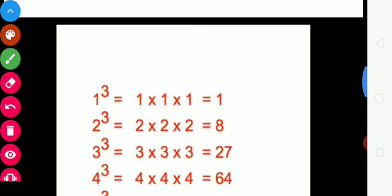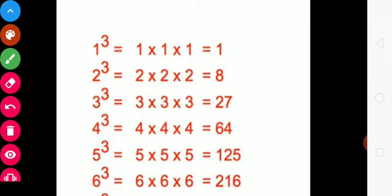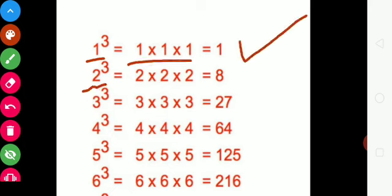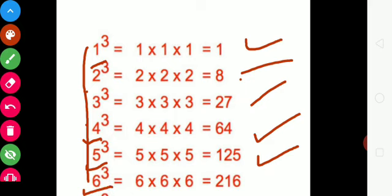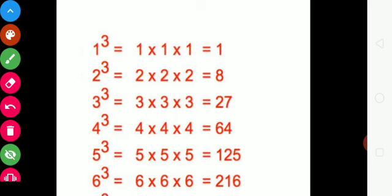Let's see some examples of Cubes. Here we can see some natural numbers and their cubes. Cube of 1 is 1. Cube of 2 is 8, because 2 multiplied three times gives 8. Cube of 3 is 27. Cube of 4 is 64. Cube of 5 is 125. Cube of 6 is 216. These are all examples of Cubes.